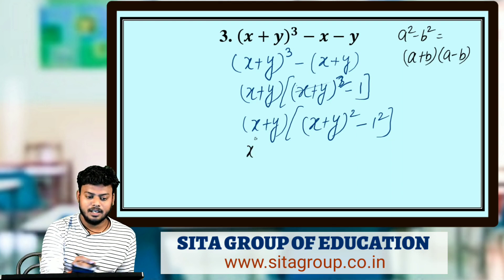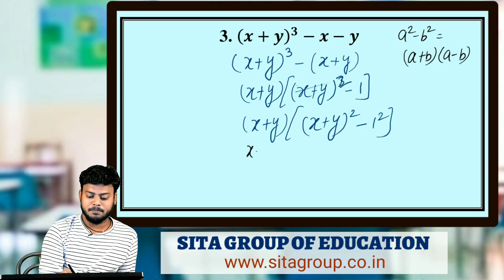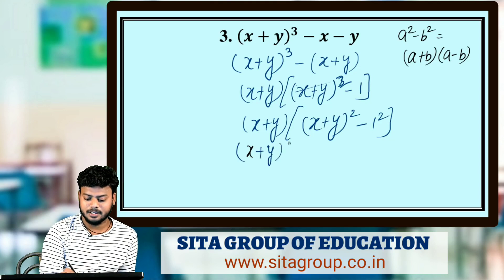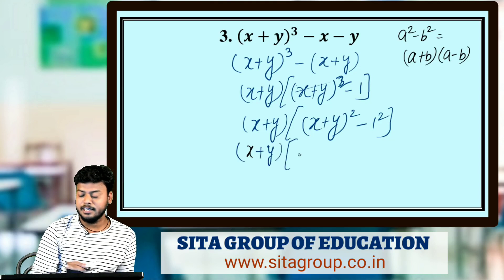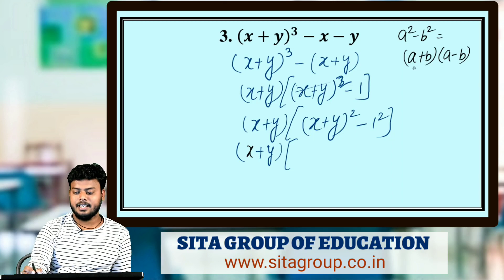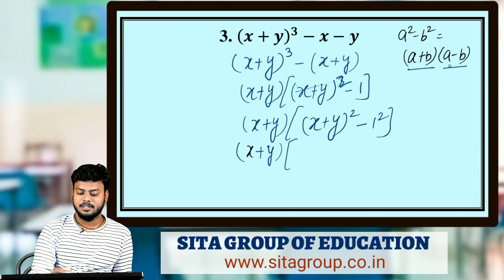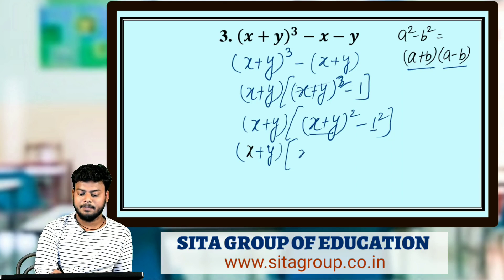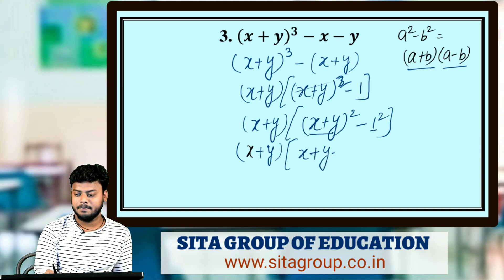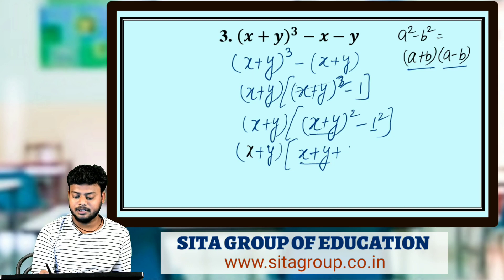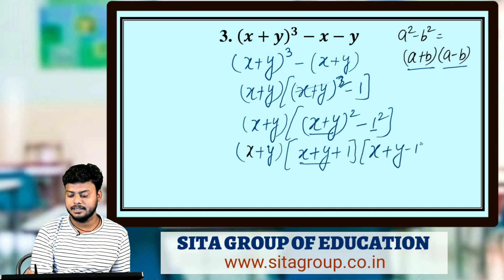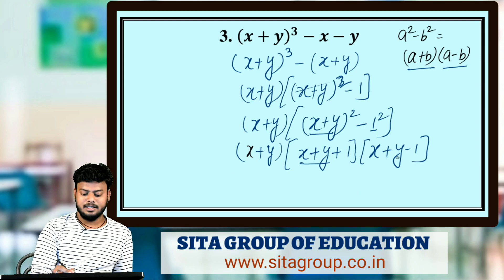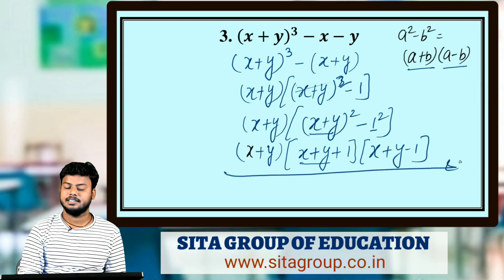Applying the formula with a = (x + y) and b = 1, the factorized result is (x + y)(x + y + 1)(x + y - 1). This is your answer.